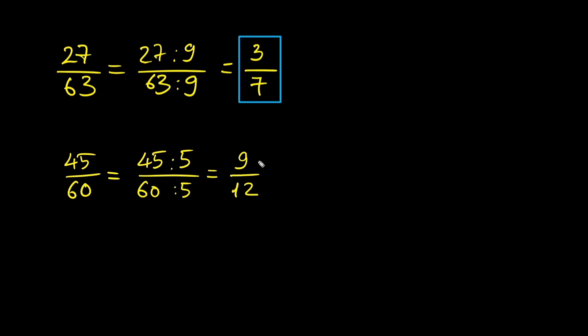Now both 9 and 12 are divisible by 3. Divide them by 3. 9 divided by 3 is 3. 12 divided by 3 is 4. So the final answer is 3 over 4.